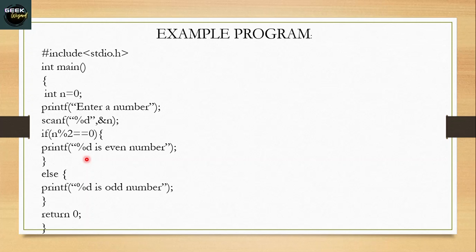So what will be printed when the remainder of 4 mod 2 is equal to 0?